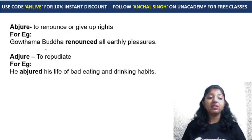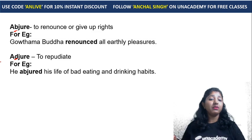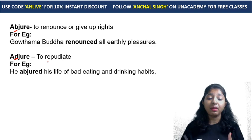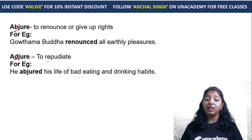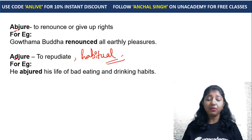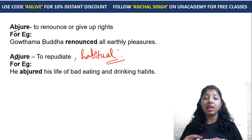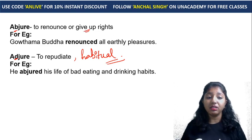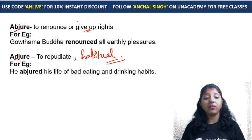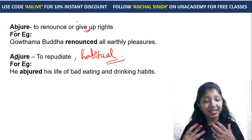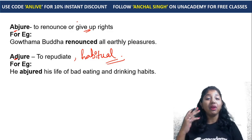The next pair is abjure and adjure — only a difference of B and D, otherwise the whole word is the same. Abjure means to renounce or give up rights. Adjure means to repudiate. For example: 'He abjured his life of bad eating and drinking habits' — meaning he gave up those habits. Also, 'Gautama Buddha renounced all earthly pleasures' — he gave up, he abjured all earthly pleasures.